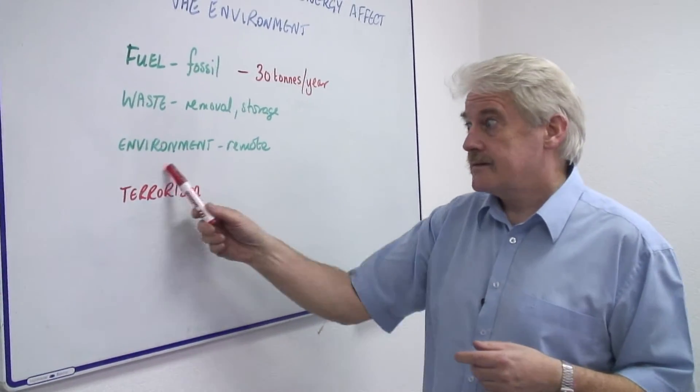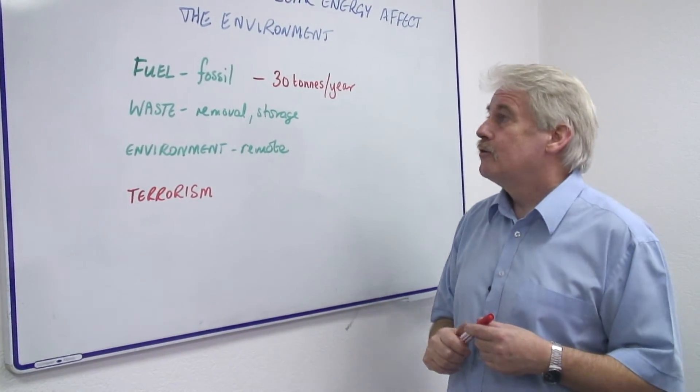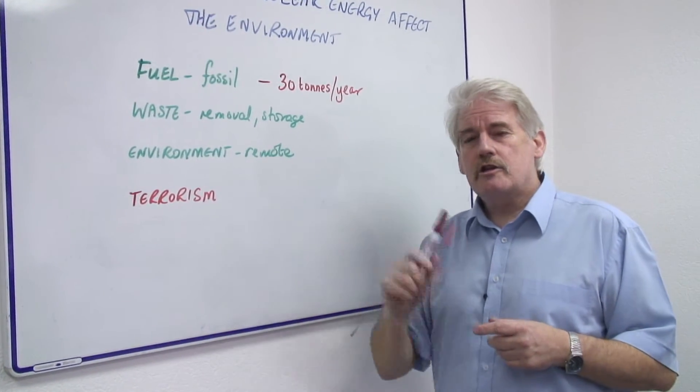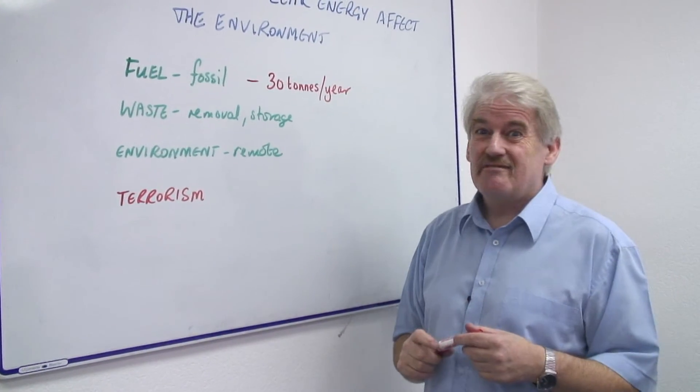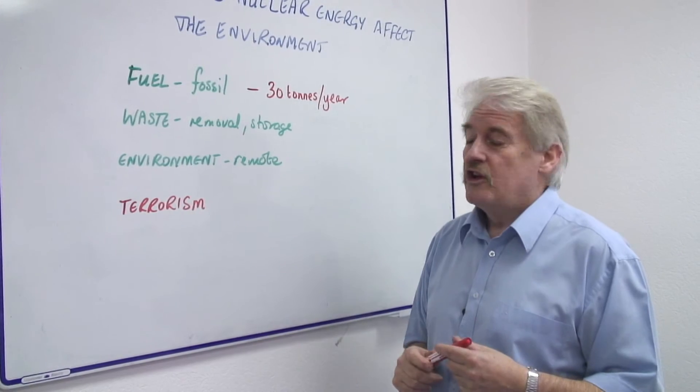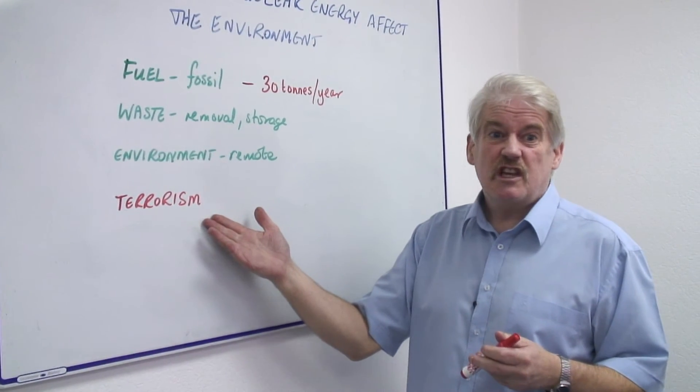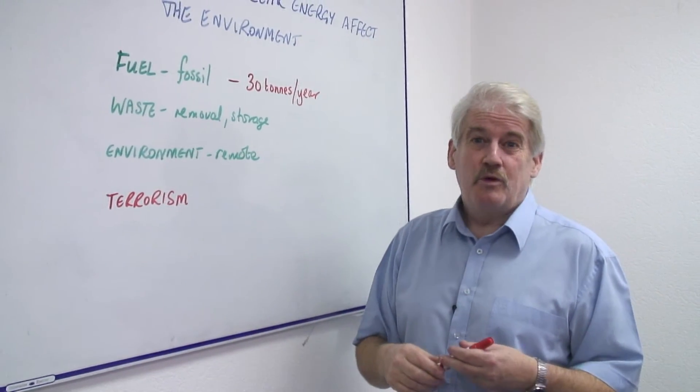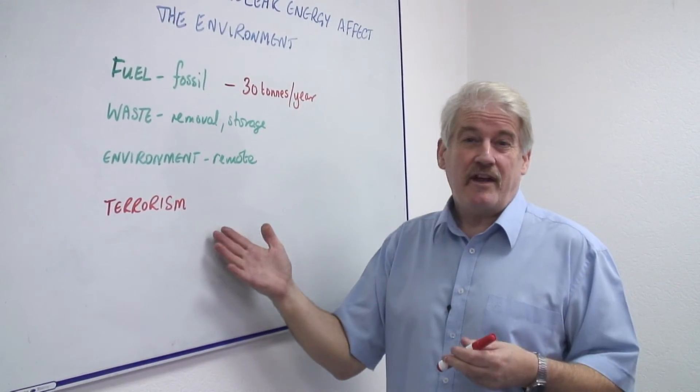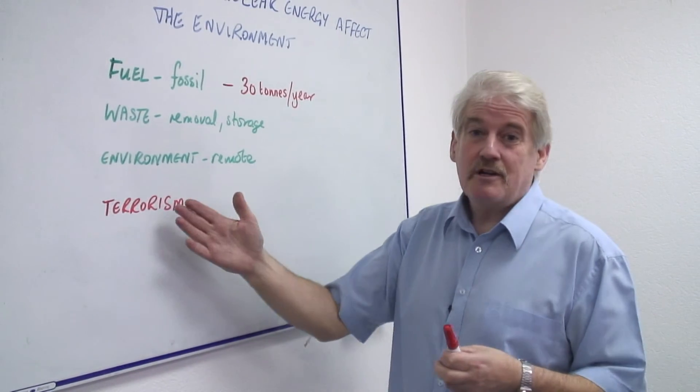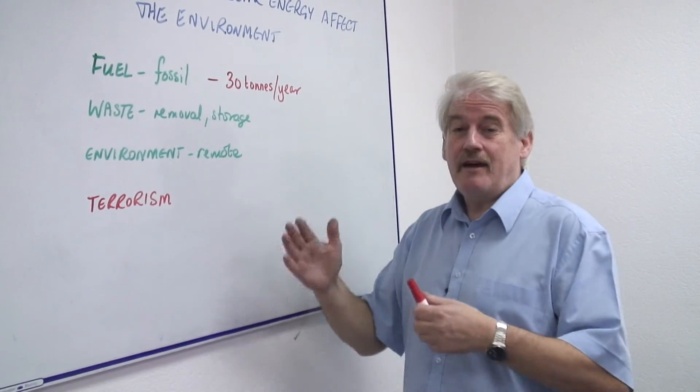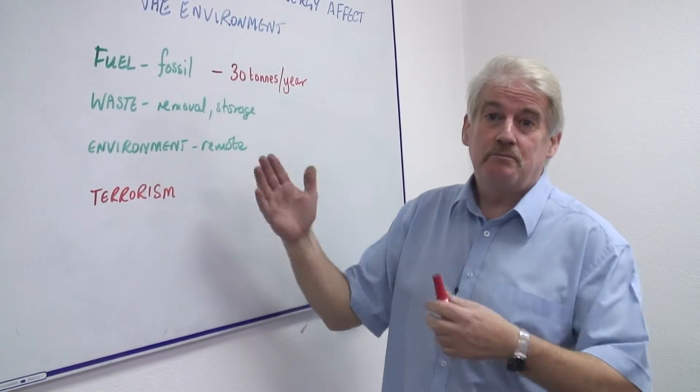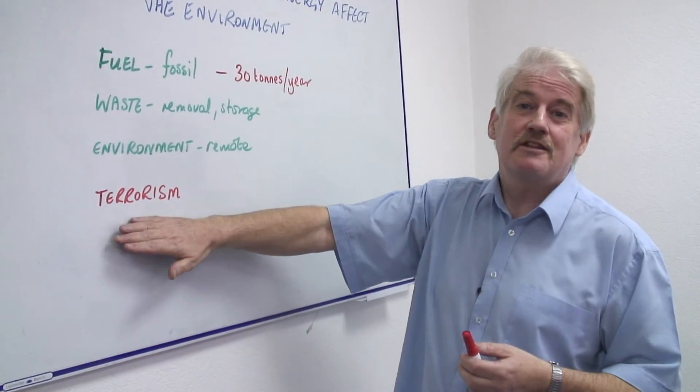Our last thing to consider is terrorism. Well, terrorism affects our environment. How does it work with nuclear power? Well, the answer is not really at all. Nuclear materials are toxic, they're poisonous, but for a terrorist to build a bomb would take an awful lot of effort. And at the same time, it'd have to have an awful lot of support, and it takes nations to build bombs. So I don't think terrorism is something to consider.